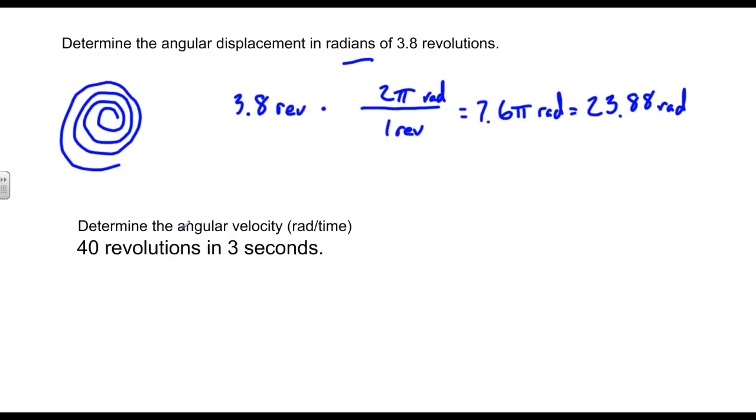If I want to determine my angular velocity or how many radians I have turned over a period of time, when I have 40 revolutions in 3 seconds, I set up 40 revs over 3 seconds. And what I want to determine is how many radians per period of time I have. I know that 1 rev, once again, is equal to 2 pi radians. This gives me 80 pi over 3 radians per second. If I do the multiplication, I end up with approximately 83.78 radians per second.